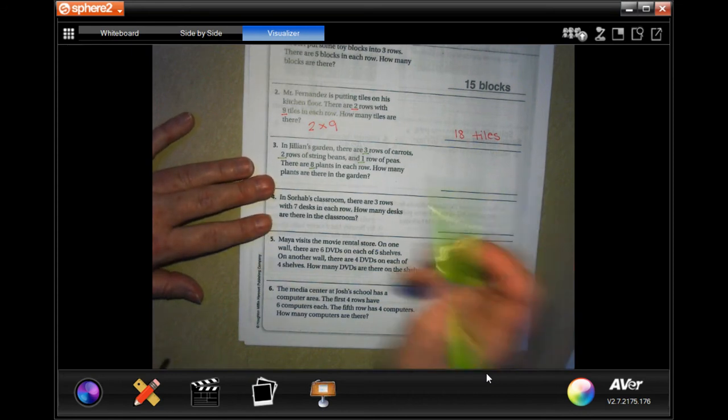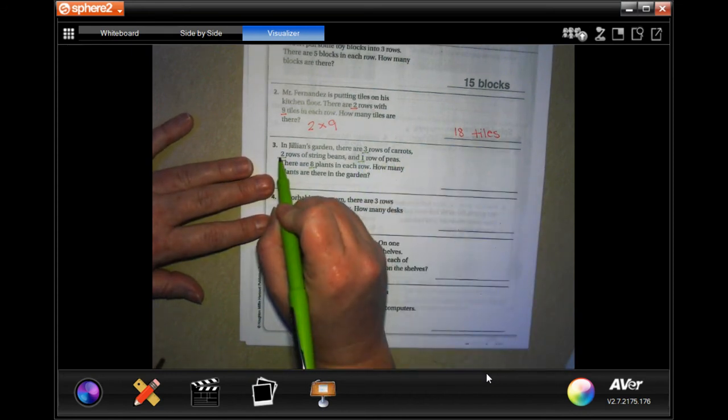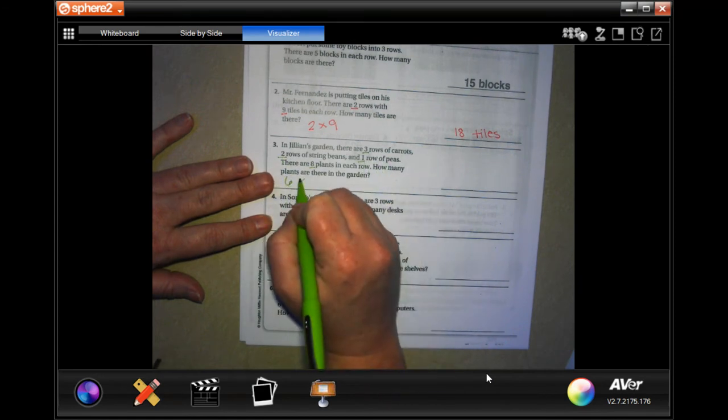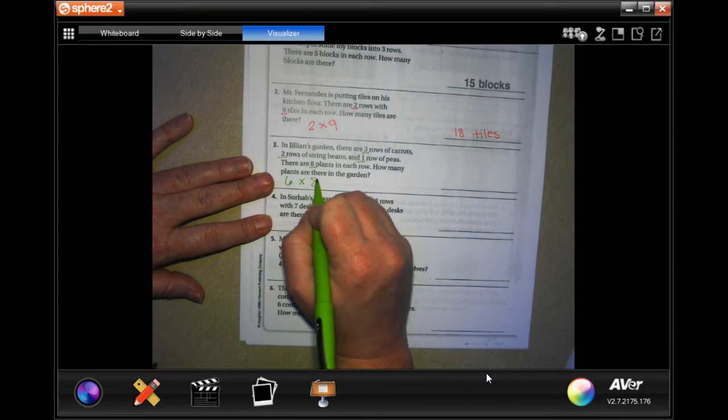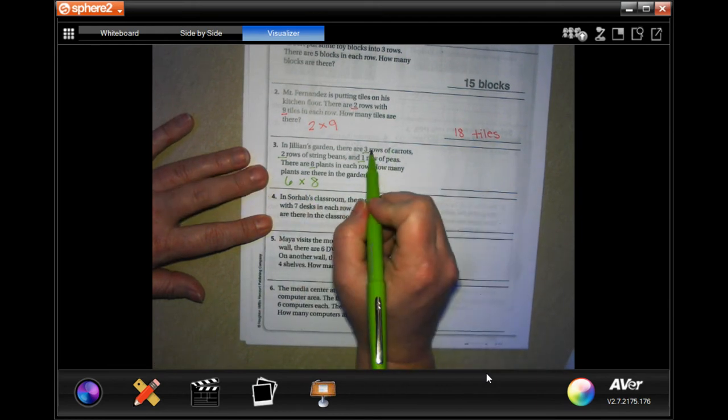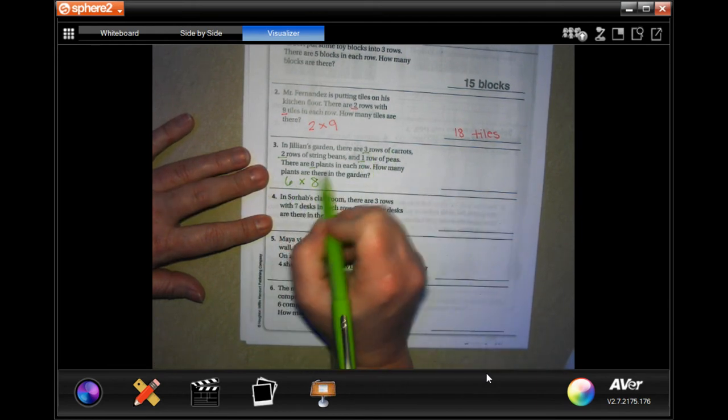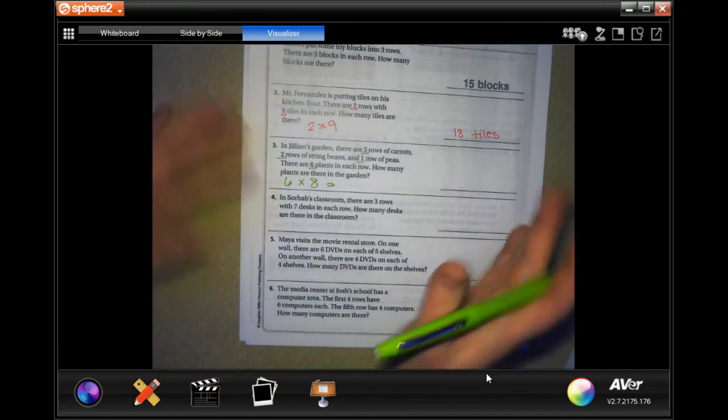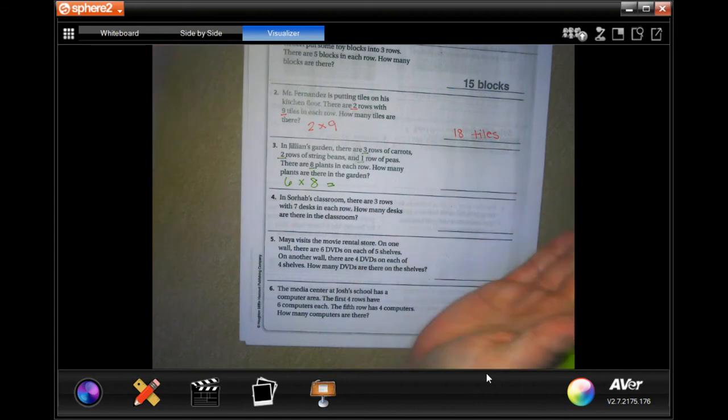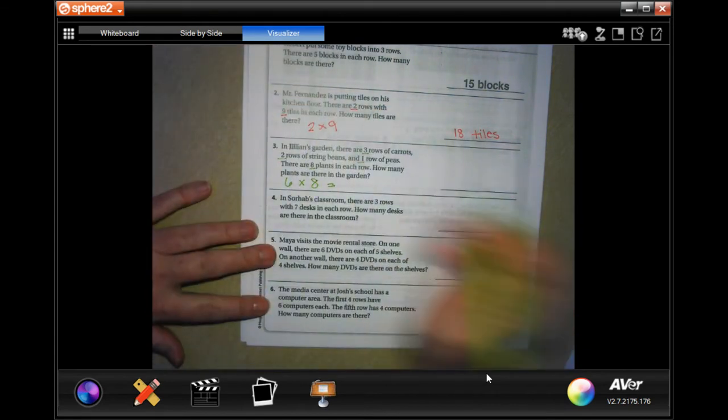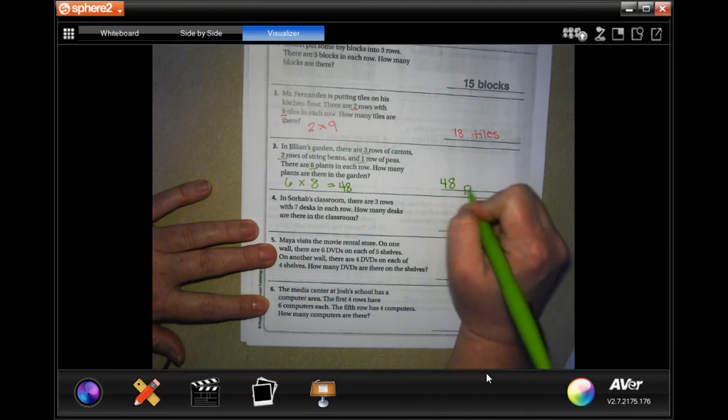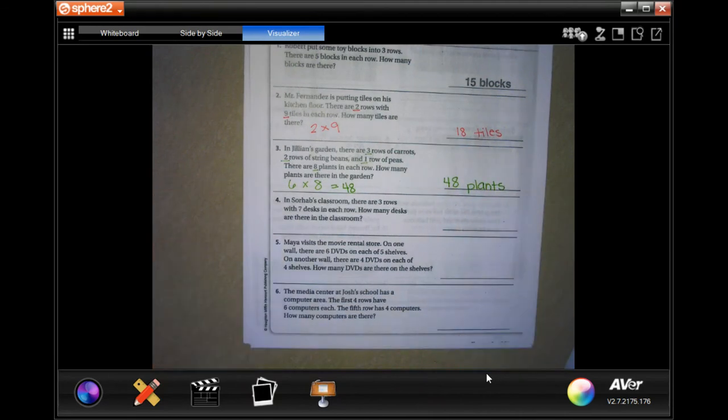Okay, so three plus two is five, plus one is six, and there's eight plants in each row. So there's six rows, and there's eight plants in each row. I'm gonna do you guys a little favor and go, six times eight is 48. 48 plants.